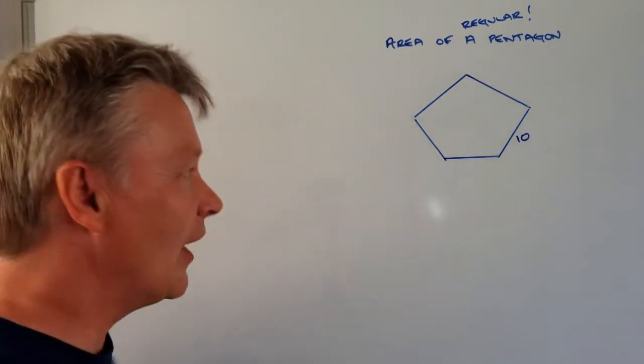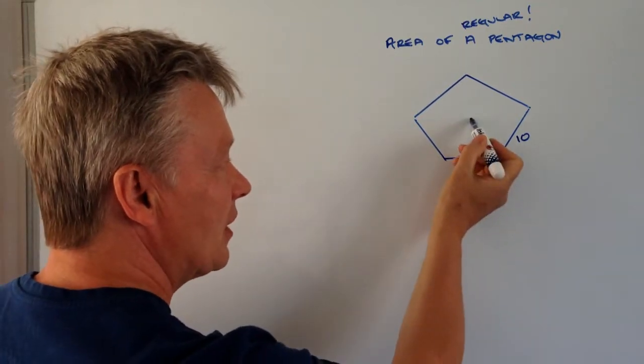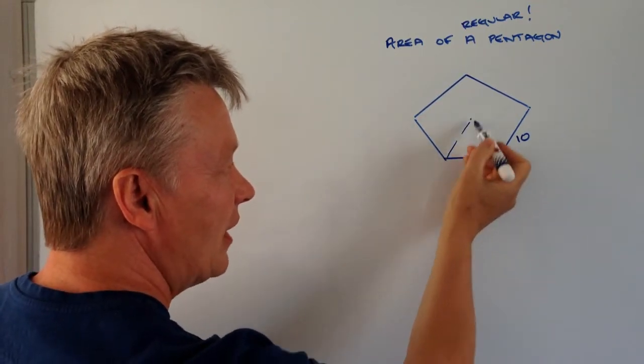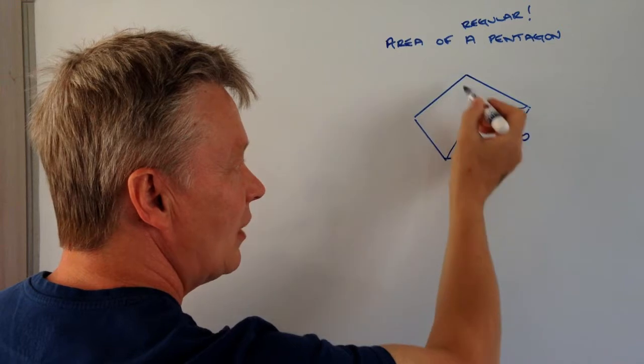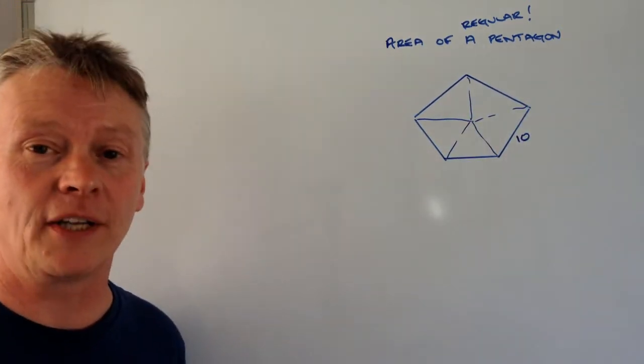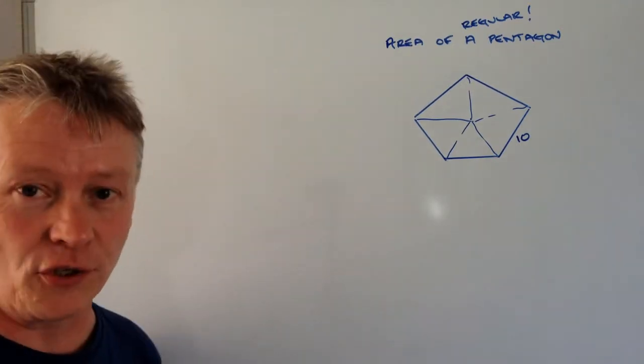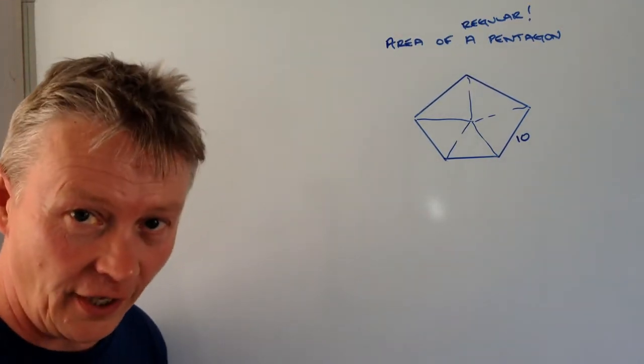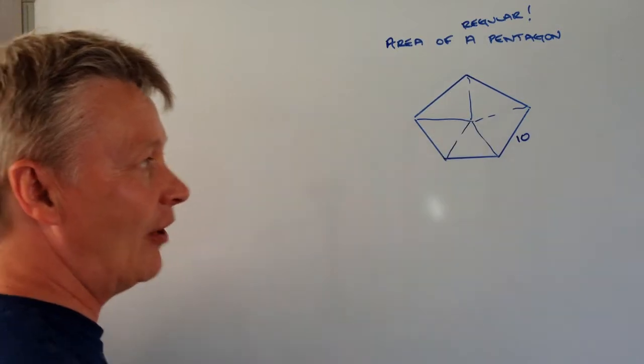Okay, well the way we're going to do that is we're going to look at this particular pentagon and say, well actually it's made up of a series of triangles. Now in order to find out the total of the area of the pentagon, what we're going to do is look at one of those triangles, work out its area and then multiply by 5.